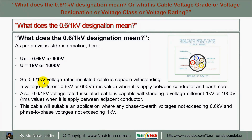So a 0.6/1 kV rated insulated cable is capable of withstanding a voltage difference of 0.6 kV or 600 volt RMS when applied between a conductor and the earth core. Similarly, a 0.6/1 kV rated cable is capable of withstanding a voltage difference of 1 kV or 1000 volt RMS when applied between adjacent conductors.